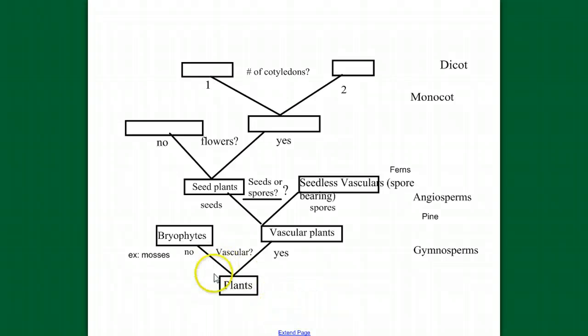If we look at the difference between the mosses, the bryophytes, and where we are here with the ferns, the main difference is we have vascular tissue now. So we need to remind ourselves what vascular tissue is.